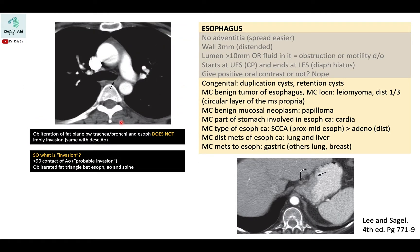When do we say there is invasion of adjacent structures? On a normal CT, the esophagus has intimate relation to the tracheobronchial tree anteriorly and the descending aorta posteriorly. Infiltration of the fat plane between the esophagus and the airway, or obliteration of the fat plane with the descending aorta alone, is still acceptable. Invasion is called when there is 90 degrees or more of contact between the aorta and the esophageal mass — that is probable invasion. A second criterion is obliteration of the fat plane between the esophagus, aorta, and spine.